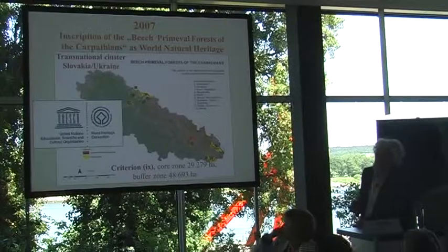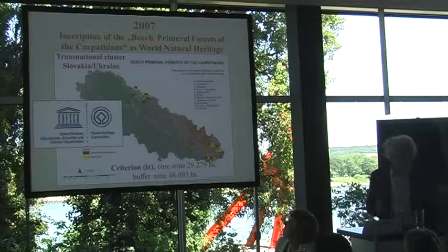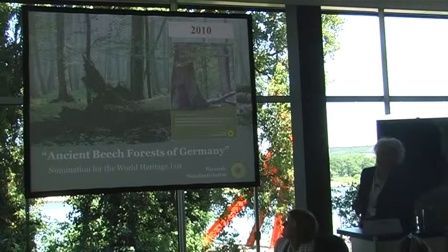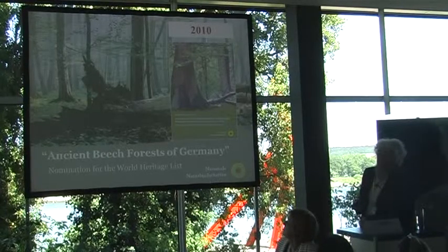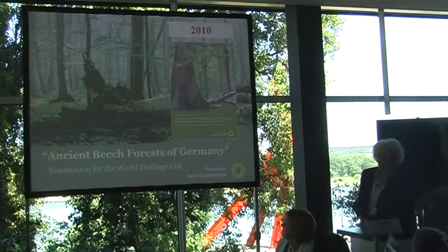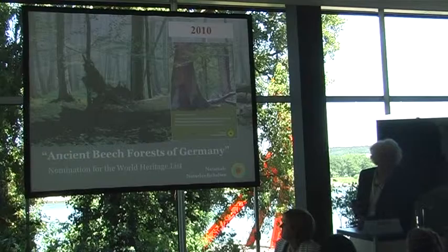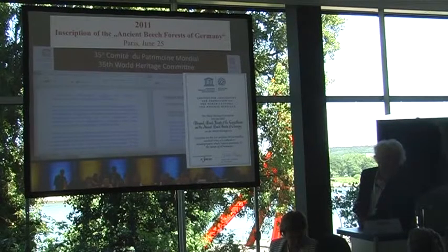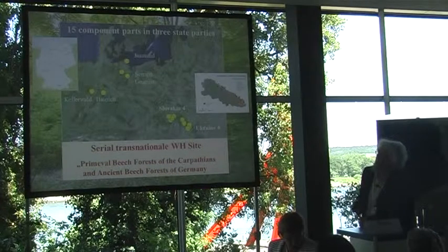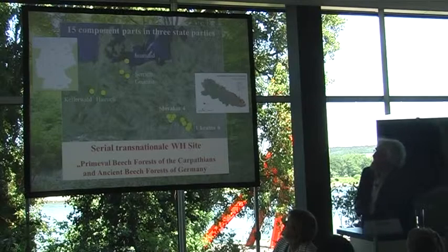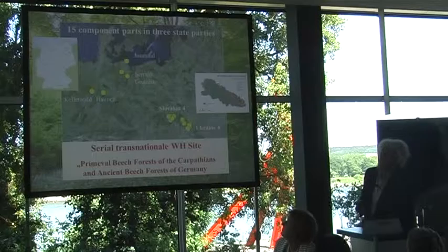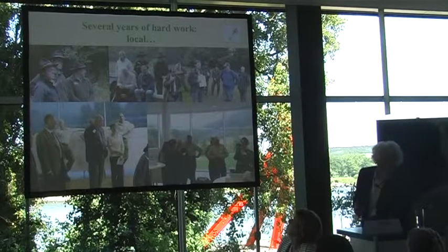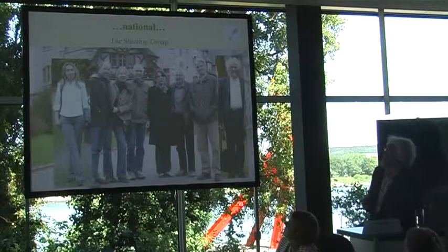Two years later, we started in Germany a process to look for the value of ancient beech forests, and in 2007, the primeval beech forests of the Carpathians were inscribed as a World Natural Heritage Site, as the last remnants of virgin forests in central Europe. In 2010, Germany submitted an extension nomination to the World Heritage Center with the agreement of Ukraine and the Slovak Republic, and in 2011, the ancient beech forests were inscribed as an extension, making it a serial transnational world natural heritage site consisting of fifteen component parts in three countries.